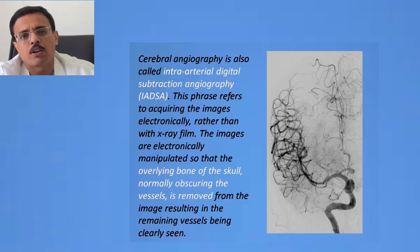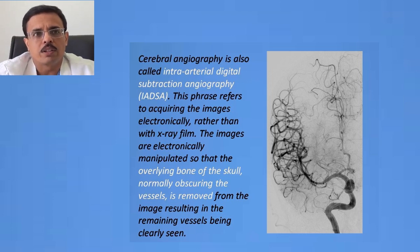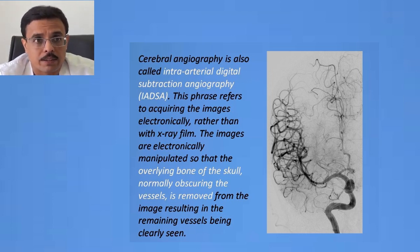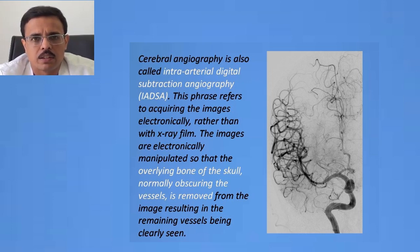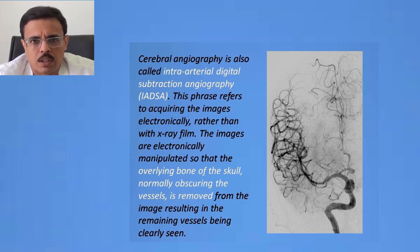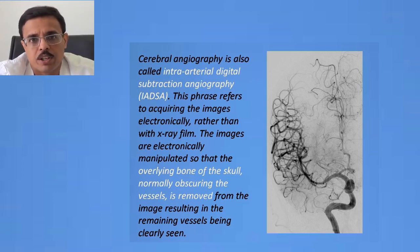In the brain, we very commonly call it intra-arterial digital subtraction angiography, or DSA. DSA refers to acquiring images electronically rather than just with x-ray film, and these images are manipulated so as to remove the overlying bone of the skull, which makes the underlying blood vessels very clear, as you can see in this adjacent image.